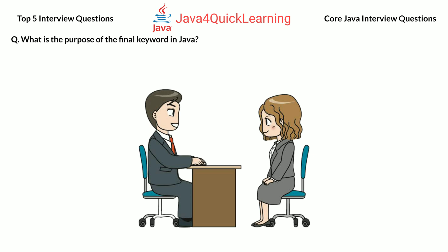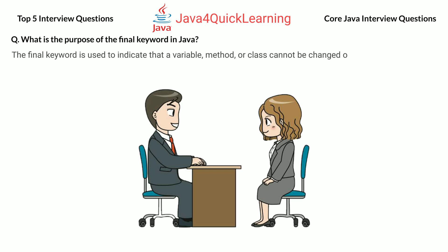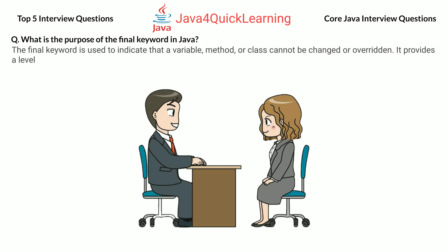What is the purpose of the final keyword in Java? The final keyword is used to indicate that a variable, method, or class cannot be changed or overridden. It provides a level of constancy.